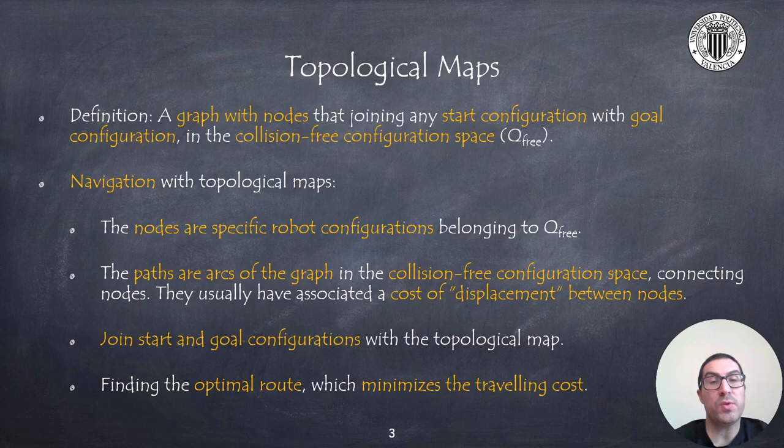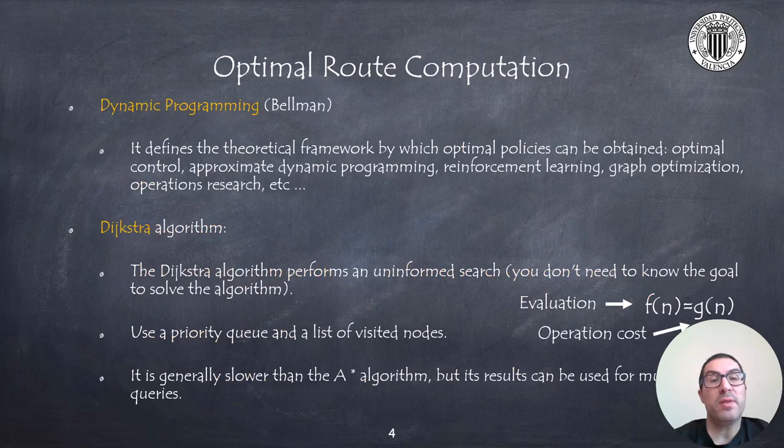In addition to this, routes usually have an associated cost to move from one node to another one. Sometimes the start and goals are not part of the map, so they must be connected somehow to the graph to solve the optimal route problem, for instance, finding the route that connects the closest graph configuration.